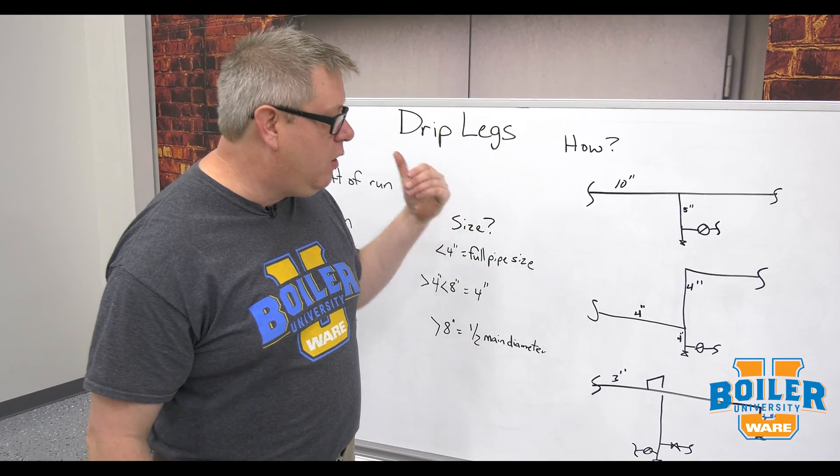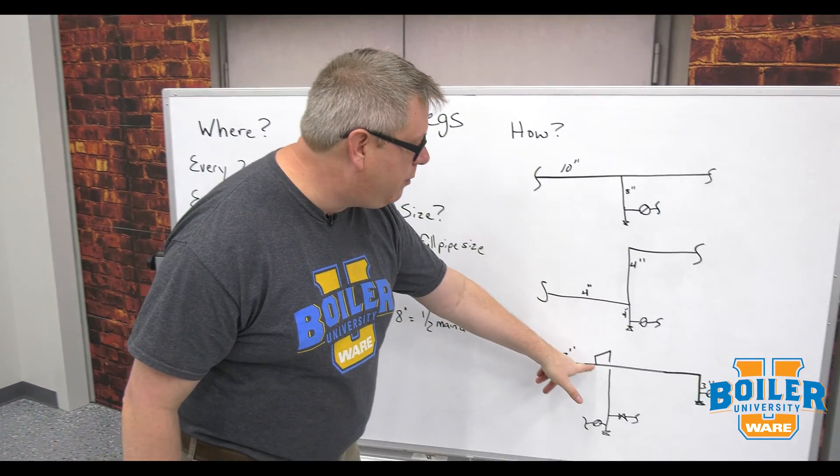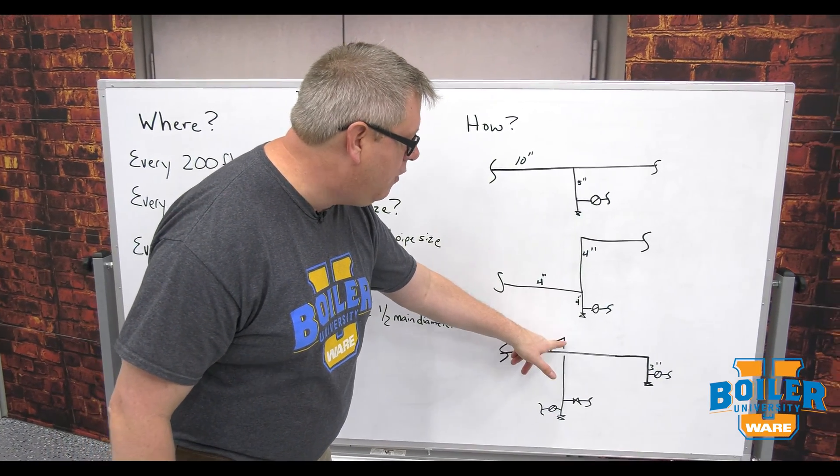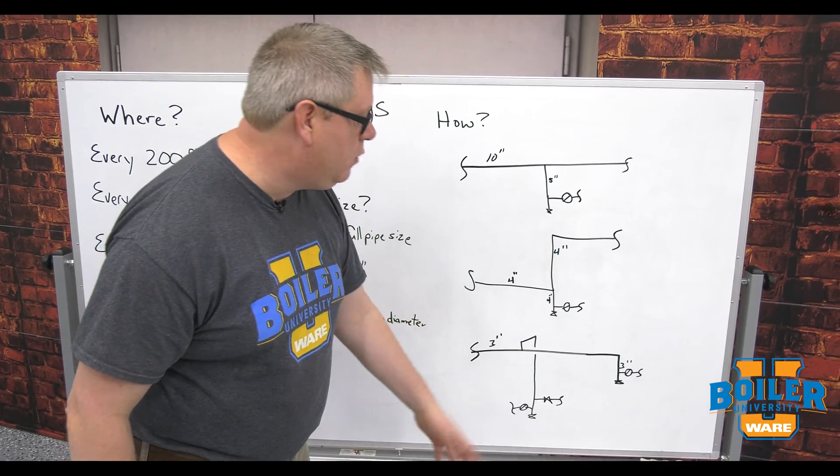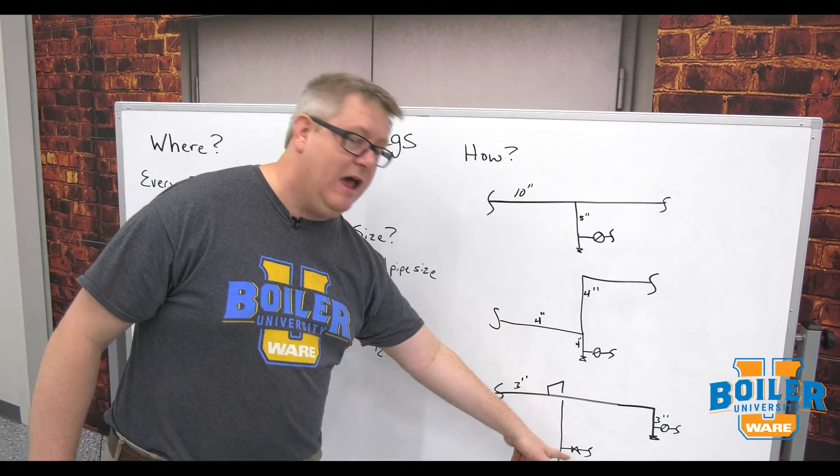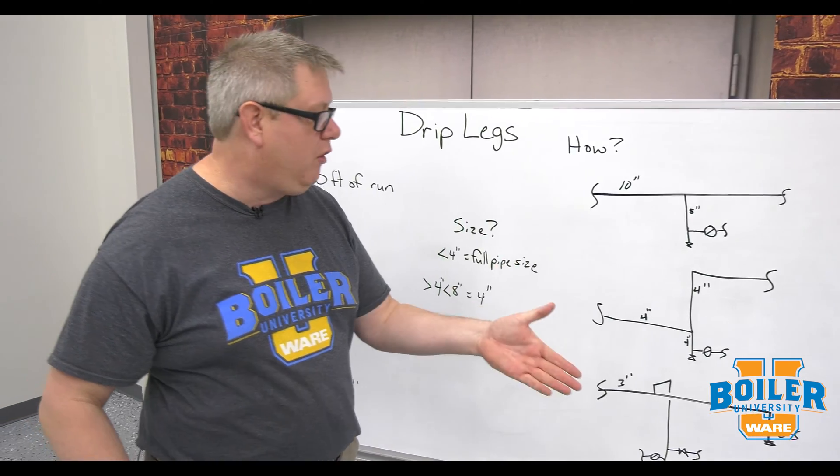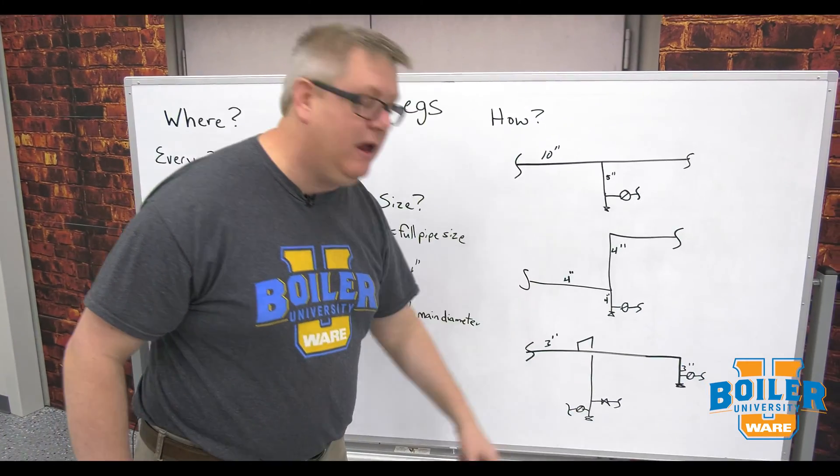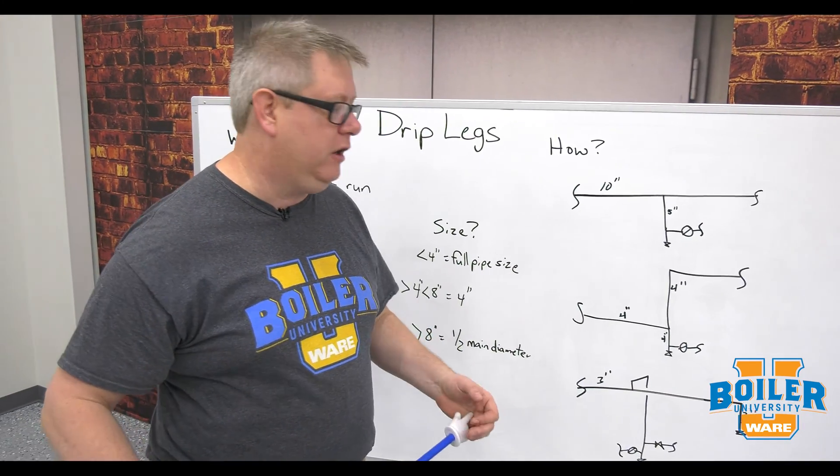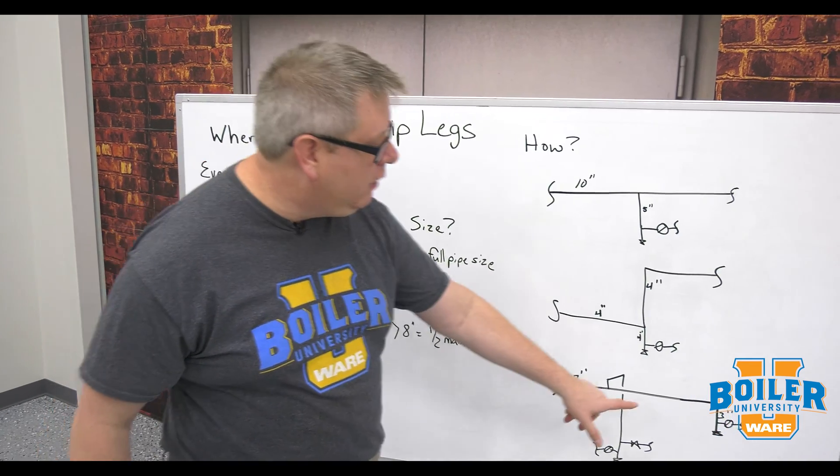So we want to pull off the top of the pipe, over a 90, down to our equipment. And because that equipment's going to have some sort of isolation or control valve, we're going to have a trap down there to keep that header clear.